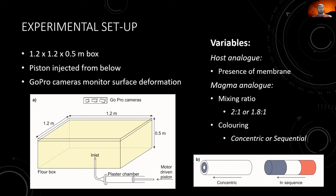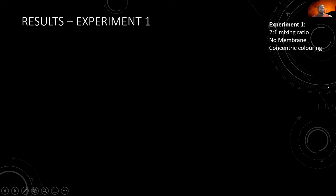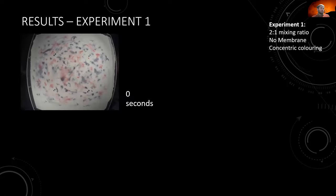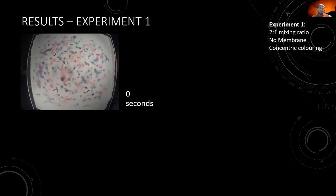Here are results from one experiment in the suite: a 2-to-1 mixing ratio, no membrane present, using the concentric coloring pattern. At zero seconds the box surface is covered with colored sand scattered on it — like a Jackson Pollock painting — allowing multiple cameras to track the same points simultaneously. Ground control points are 40 centimeters apart. The focused area for the following images is highlighted.